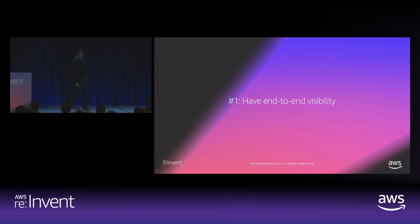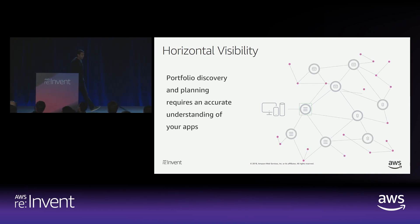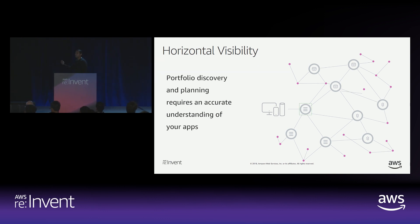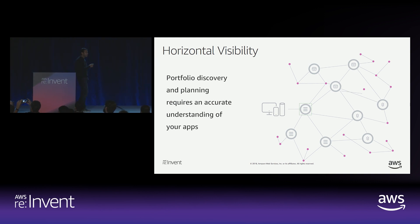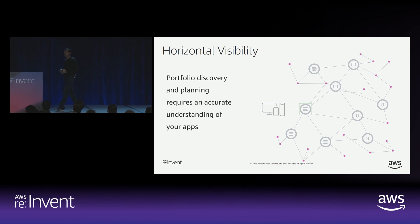That's our first best practice: having end-to-end visibility. If I have thousands of containers running and interacting with each other to perform a business function, we need to know how the interaction is going. We need to understand at a high level how everything is related — that's what we define as horizontal visibility: a 30,000-foot view that gives a comprehensive understanding of my application portfolio.